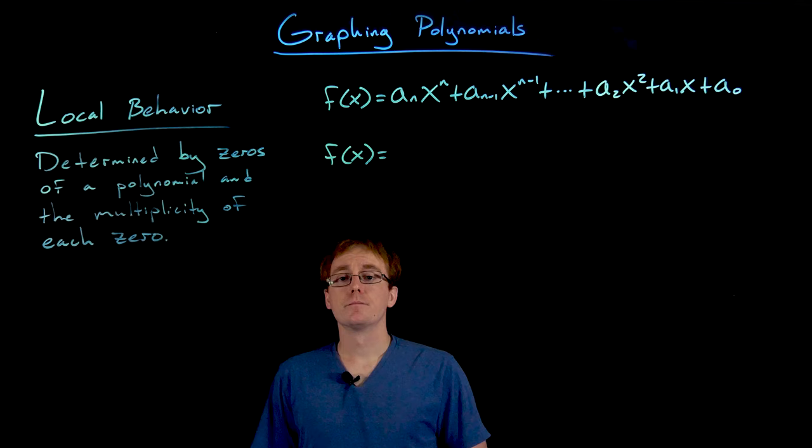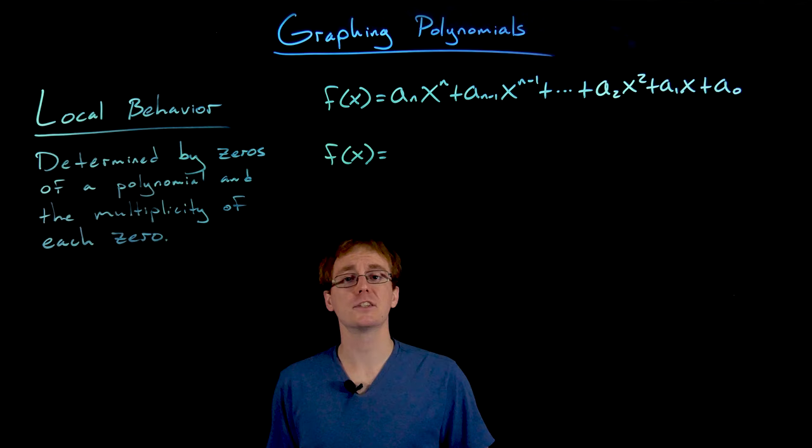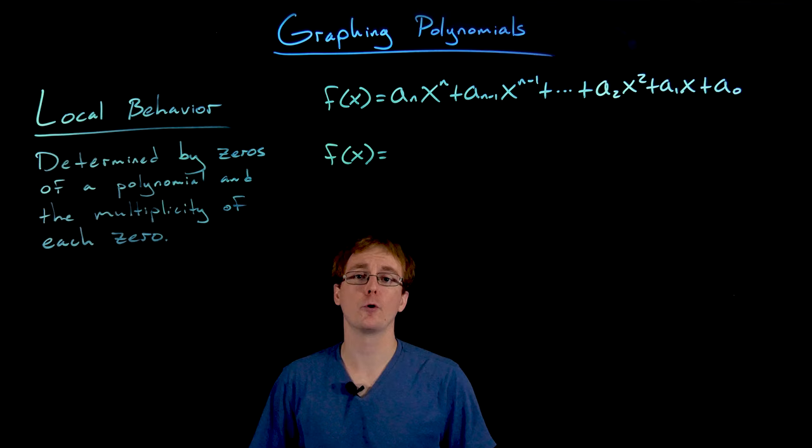In order to easily find the zeros of our polynomial, as well as the multiplicity of the zeros, it's going to be more helpful for us to work with our polynomial function in a factored form instead of an expanded form.